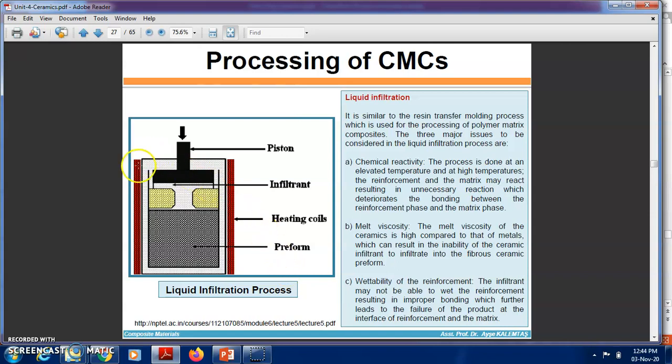Here you can see the liquid infiltration process schematic. This is the liquid infiltration process: heating coil is there, then the preform, then the piston is given in the upward direction. It is similar to the resin transfer molding process used for processing polymer matrix composites. There are three major issues to be considered in the liquid infiltration process: chemical reactivity, melt viscosity, and wettability.